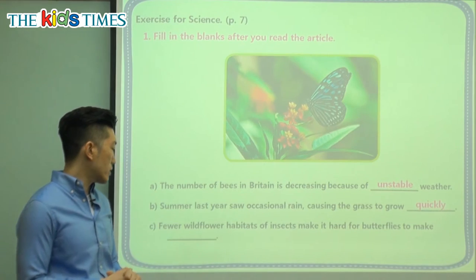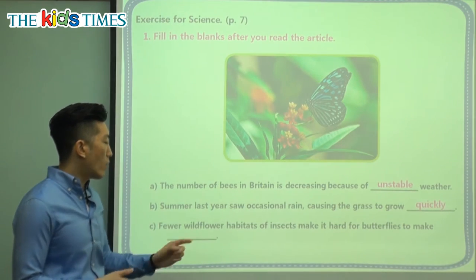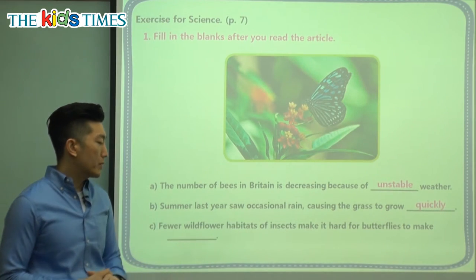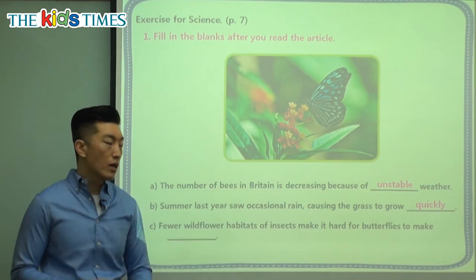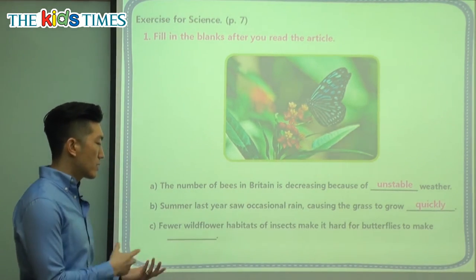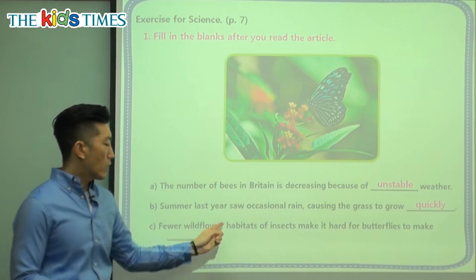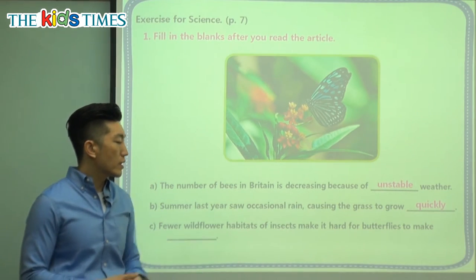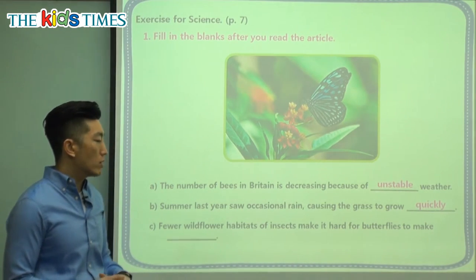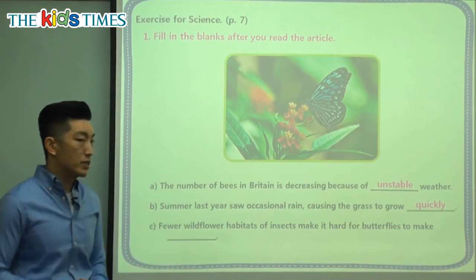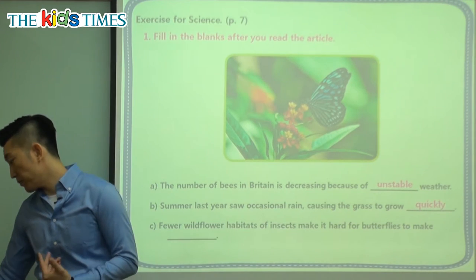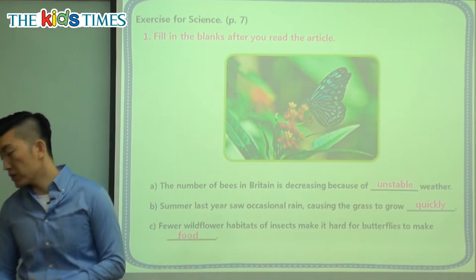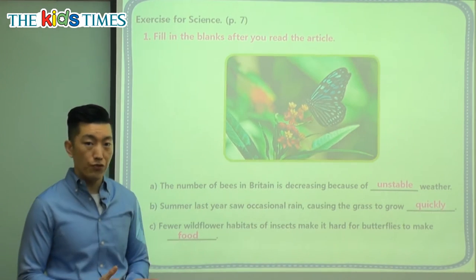It says here in the last question: fewer wildflower habitats. Habitats are the places where the insects can live. Fewer habitats of insects make it hard for butterflies to make what? To make something that they need very much, which is food.